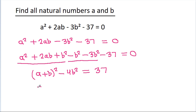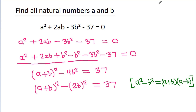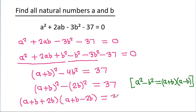So, (a minus b) squared minus 4b squared is equal to 37. And using a squared minus b squared equals (a plus b)(a minus b), this will be equal to (a minus b plus 2b) times (a minus b minus 2b) is equal to 37, which is (a plus b) times (a minus 3b) is equal to 37.